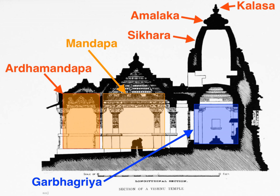At the center of the temple, typically below and sometimes above or next to the deity, is a mere hollow space with no decoration, symbolically representing Purusha — the supreme principle, the sacred universal, one without form, which is present everywhere, connects everything, and is the essence of everyone. A Hindu temple is meant to encourage reflection, facilitate purification of one's mind, and trigger the process of inner realization within the devotee. The specific process is left to the devotee's school of belief, and the primary deity of different Hindu temples varies to reflect this spiritual spectrum.